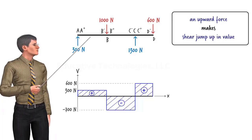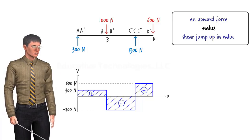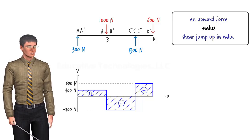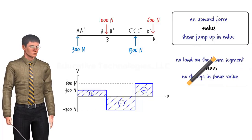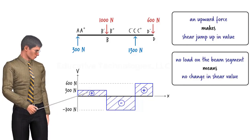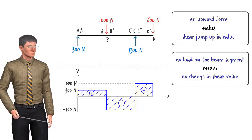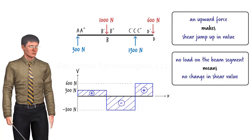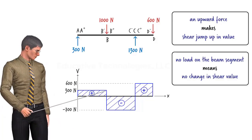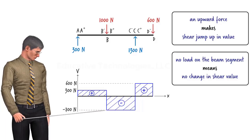The left beam segment is not subjected to any loads within it — there is no load on the beam from A+ to B-. Therefore, no change in shear takes place. Shear in this segment remains unchanged; the value from A+ all the way to B- remains 300 newtons. There is a downward force of 1000 newtons at B, which causes a drop of 1000 units in shear. Shear decreases from positive 300 newtons at B- to negative 700 newtons at B+.